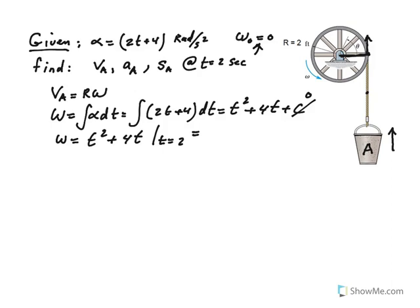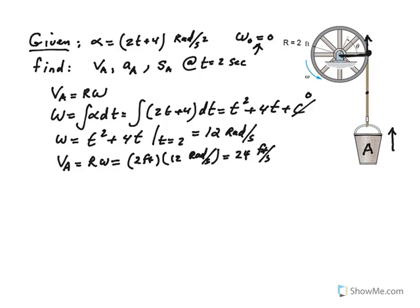If you plug in t equal to 2, that becomes 8 plus 4, which is 12 radians per second. Now I can find velocity of the bucket, which is r omega: r is 2 feet times 12 radians per second. 2 times 12 is 24, and since radian is dimensionless, that's 24 feet per second.